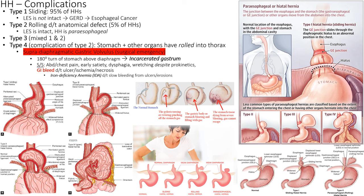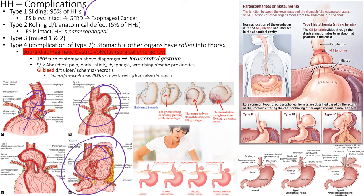There are different types of hiatal hernias. A sliding hernia is 95% of cases — the stomach slides upward, the sphincter opens, leading to GERD and then Barrett's esophagus and esophageal cancer. A rolling or paraesophageal hernia has more contents moving up; in severe cases the stomach twists 180 degrees above the diaphragm — called supradiaphragmatic gastric volvulus — a surgical emergency.